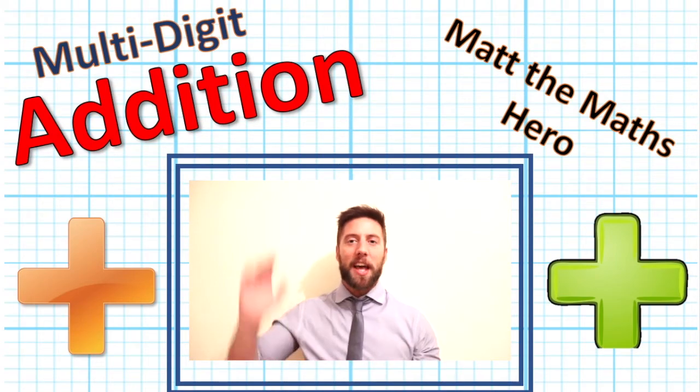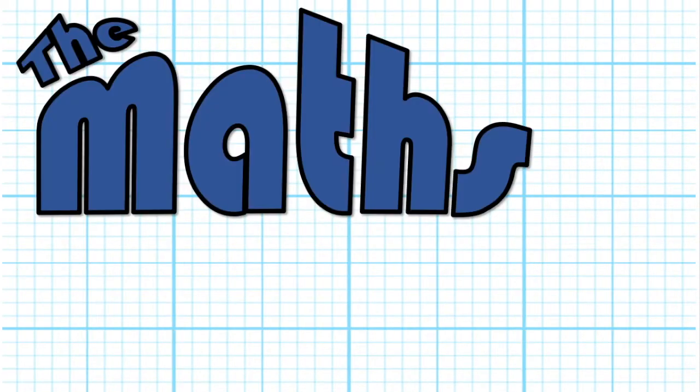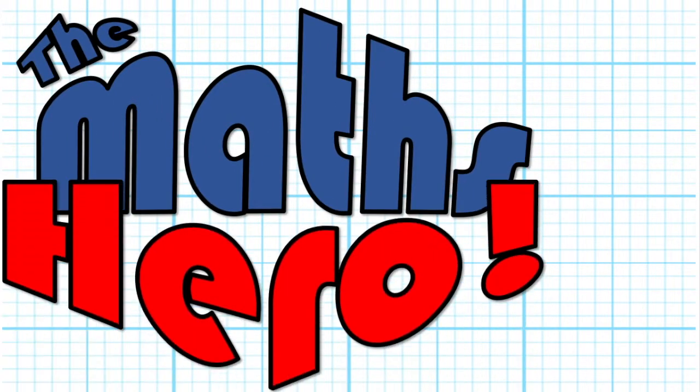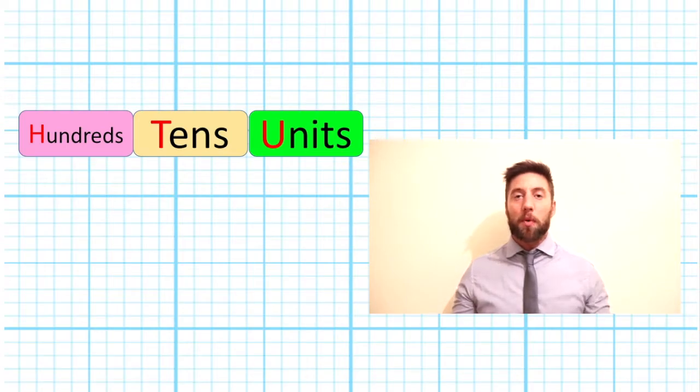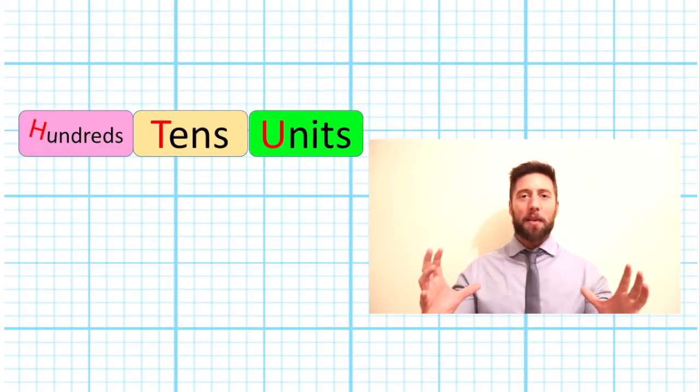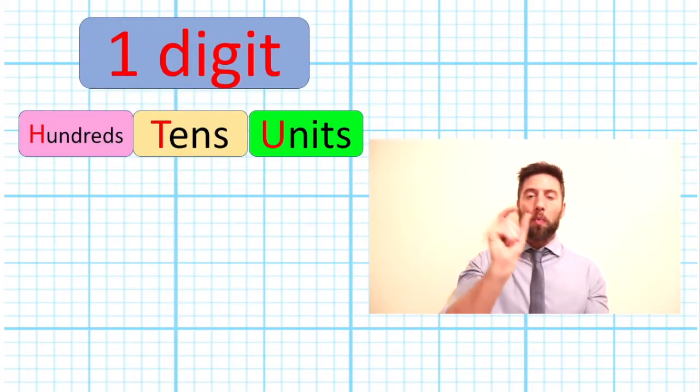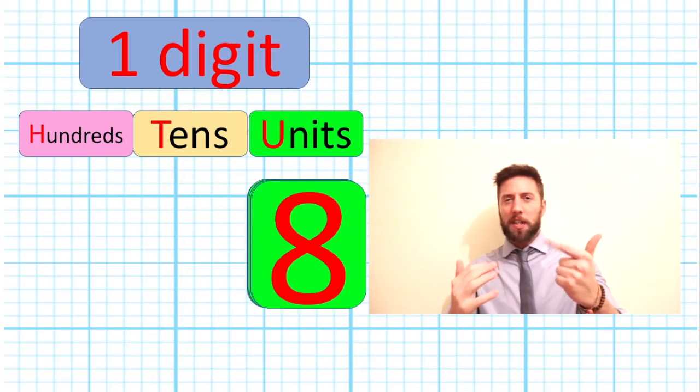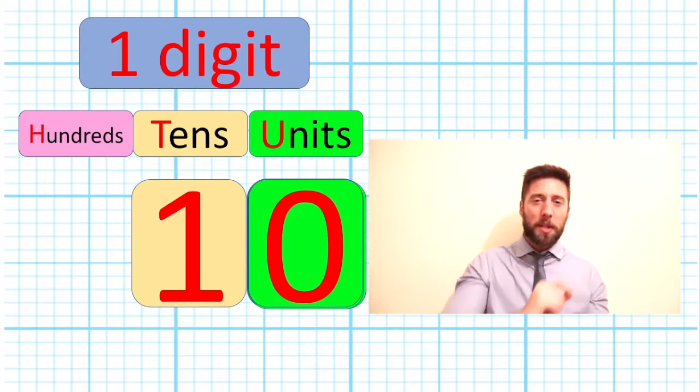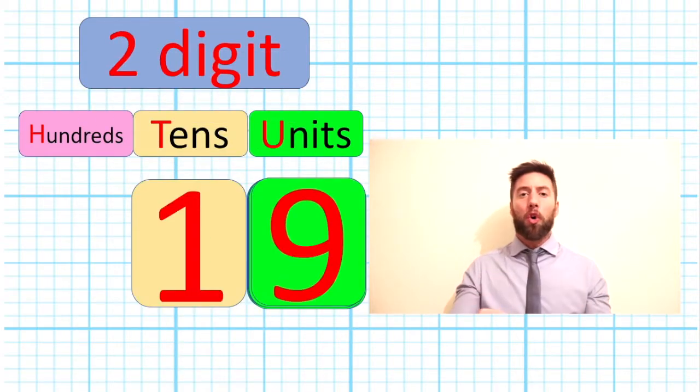But right now, let's get into it. Okay, before we can do anything, what is a multi-digit? Well, a multi-digit is any number that's got more than one digit place. So one to nine are all single digit numbers. Anything above that, ten, eleven, twelve, all multi-digit.